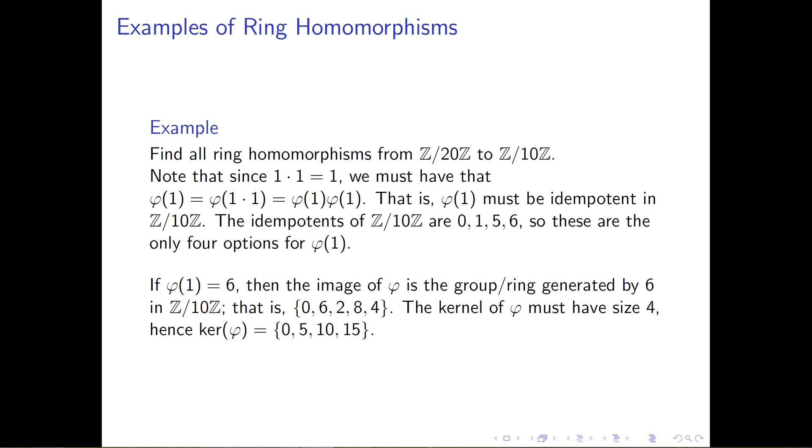And so we conclude from this that the kernel of the map φ has to have size 4. It needs to be a subgroup of ℤ mod 20 of size 4.